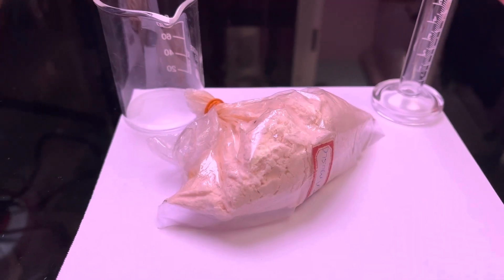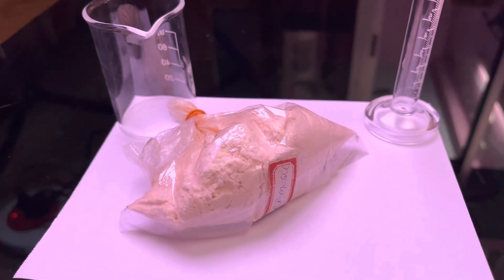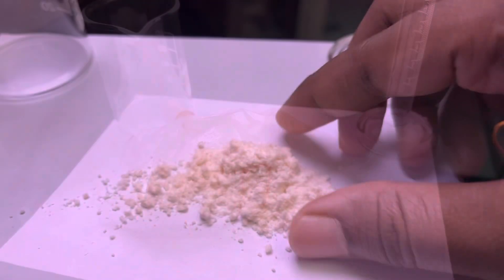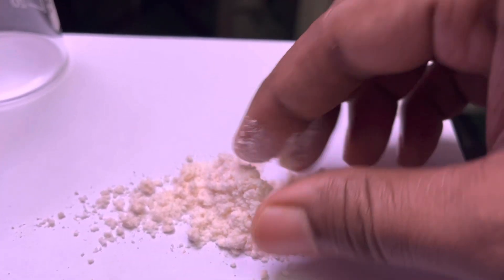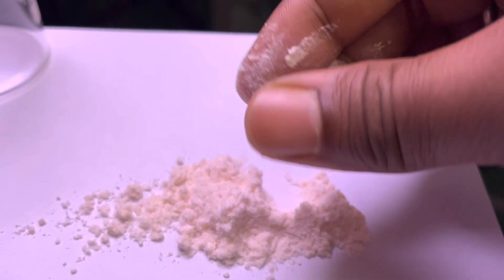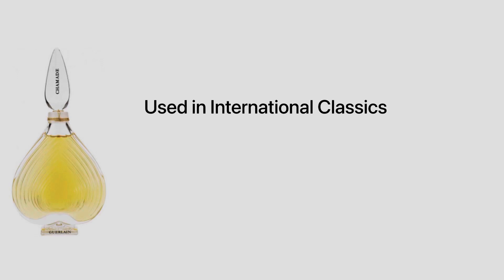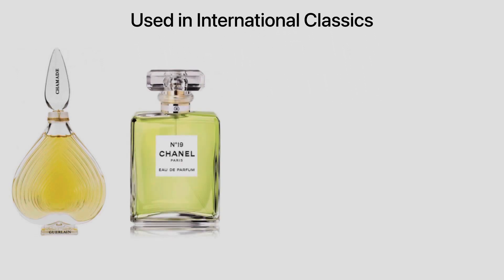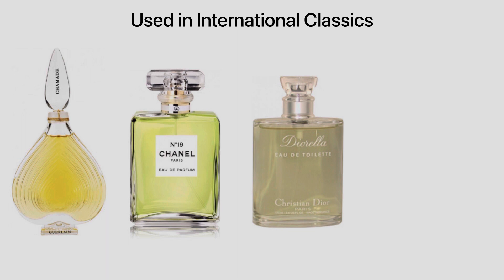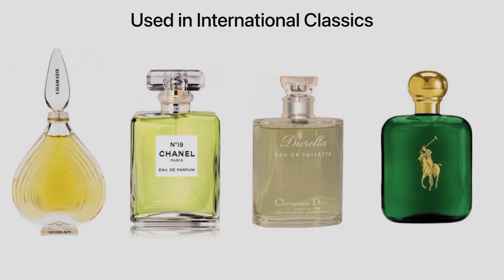This molecule has become a key ingredient in the aromatic fougère family for its superbly mossy, woody, phenolic, earthy smell. It's used alongside oak moss, and it's possible to create a very effective facsimile of a traditional fougère using this material. It's been widely used in international classics like Habit Rouge by Guerlain, Chanel No. 19, Diorella by Dior, Polo by Ralph Lauren, and especially in Cool Water by Davidoff.